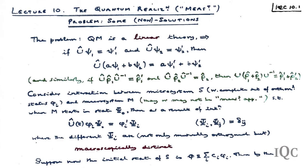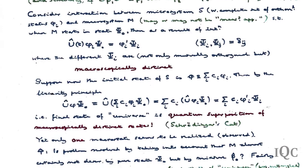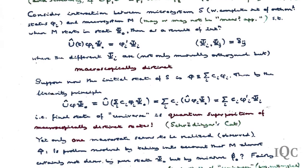Moreover, they are not merely orthogonal—they are macroscopically distinct. The standard example is Schrödinger's cat, where the states of being alive and dead are not only mutually orthogonal but very macroscopically distinct. Now if the initial state of the system is some linear combination of the eigenstates, then inevitably by the linearity principle, the final state of the universe is an entangled quantum superposition in which the macrosystem is in macroscopically distinct states. Yet as far as we are conscious, only one macrostate is realized.